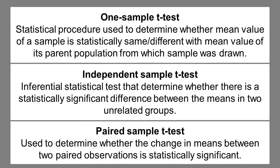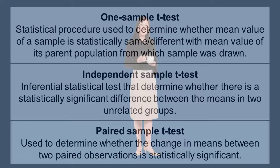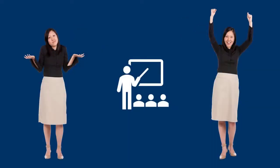Another specific form of t-test is the paired sample t-test, which is used to determine whether the change in means between two paired observations is statistically significant. In other words, we use the same respondent and compare before and after — for example, before a person received some training and whether it improved certain skill sets.